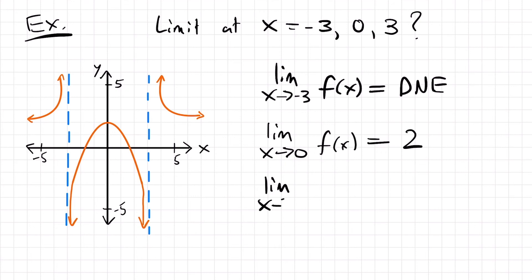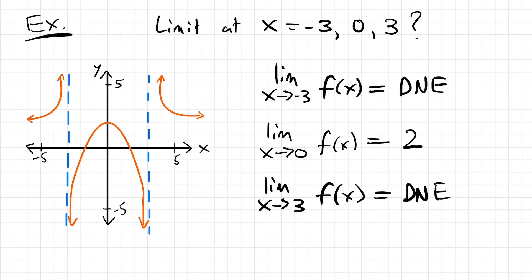For the limit as x approaches 3 from both sides, we also find ourselves at another vertical asymptote. From the left side, getting closer and closer to x equals 3, the y values are going to increasingly get smaller, so we know we're heading towards negative infinity. But from the right side, we're getting larger and larger values, heading towards positive infinity. The left side and the right side limits do not agree, so the limit simply doesn't exist.